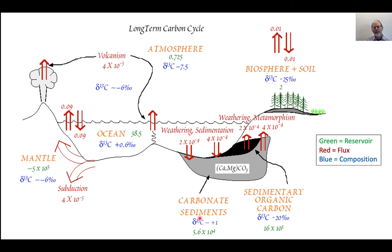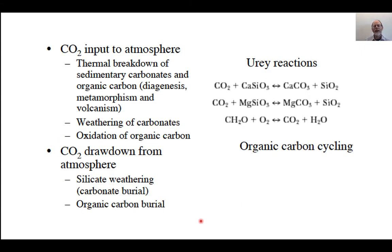Each of these has different amounts of carbon and different rates of modern fluxes of carbon, and each has distinct delta C-13 values. What Berner was saying is that there is CO2 input to the atmosphere and CO2 drawdown from the atmosphere. The inputs are thermal breakdown of carbonates and organic carbon — so diagenesis, metamorphism, volcanism, weathering of carbonates, and oxidation of organic carbon. Then silicate weathering ultimately creates carbonates that get buried, and there's organic carbon burial.